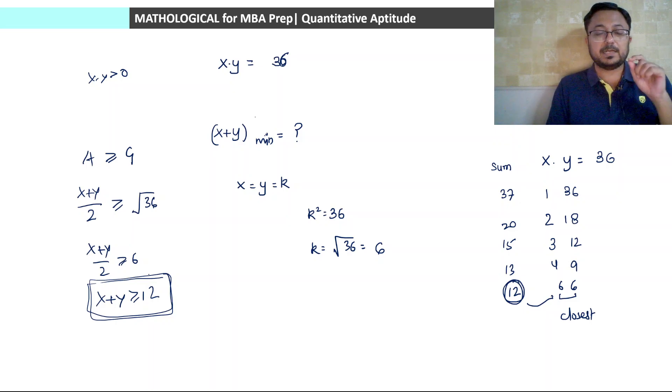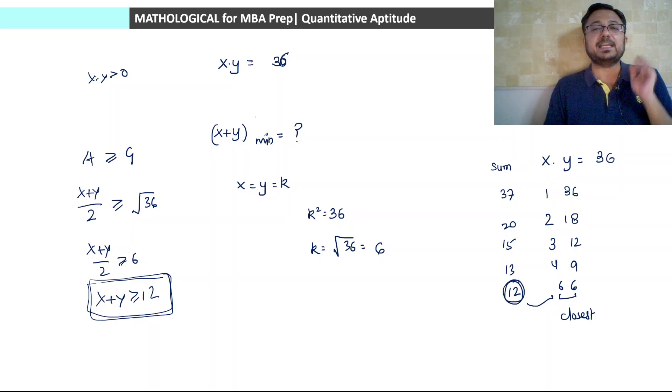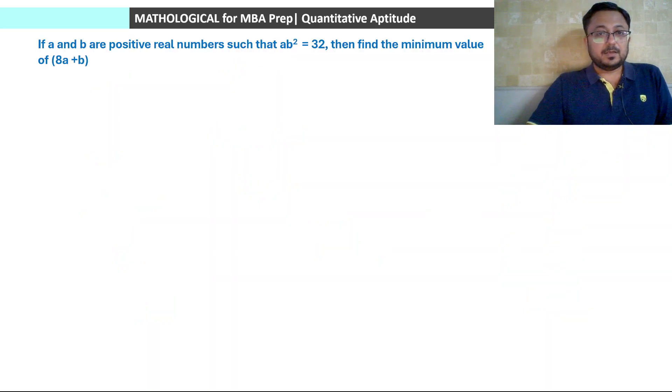This implies that the minimum value of x plus y will be equal to 12, and equality holds when x and y are equal. Now let us do the first concept-based question.